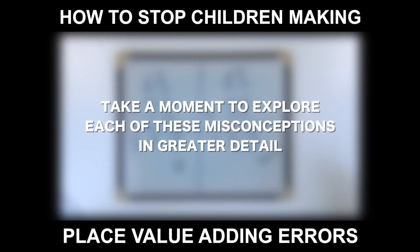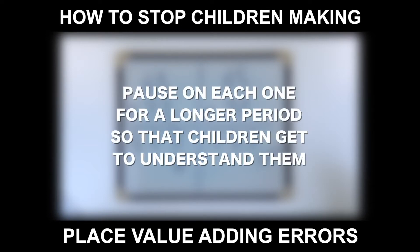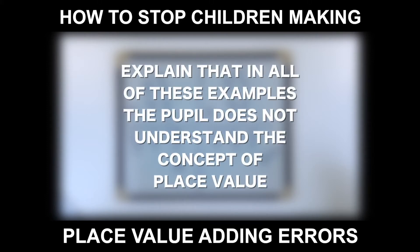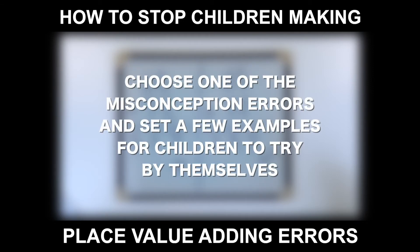Take a moment to explore each of these misconceptions in greater detail and pause on each one for a longer period so that children get to understand them. Explain that in all of these examples, the pupil does not understand the concept of place value. Choose one of the misconception errors and set a few examples for children to try by themselves so they can practice getting the right answer rather than repeating the misconception.